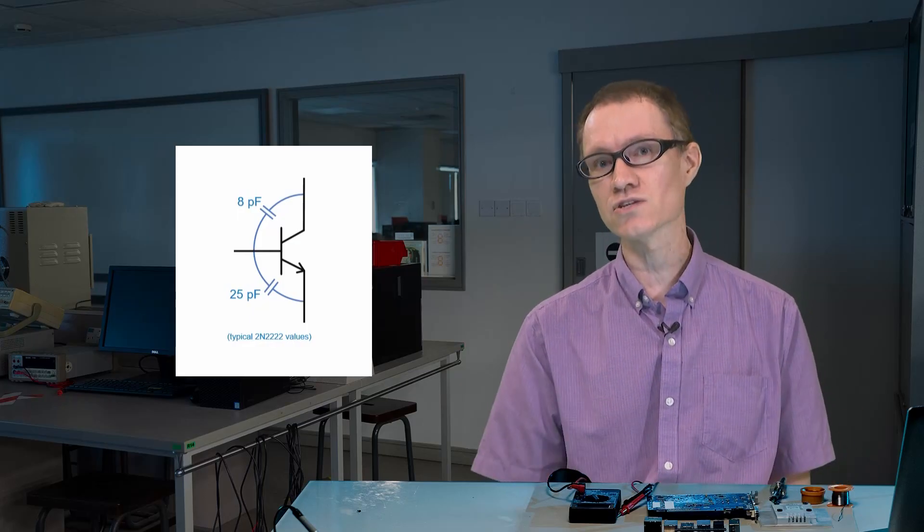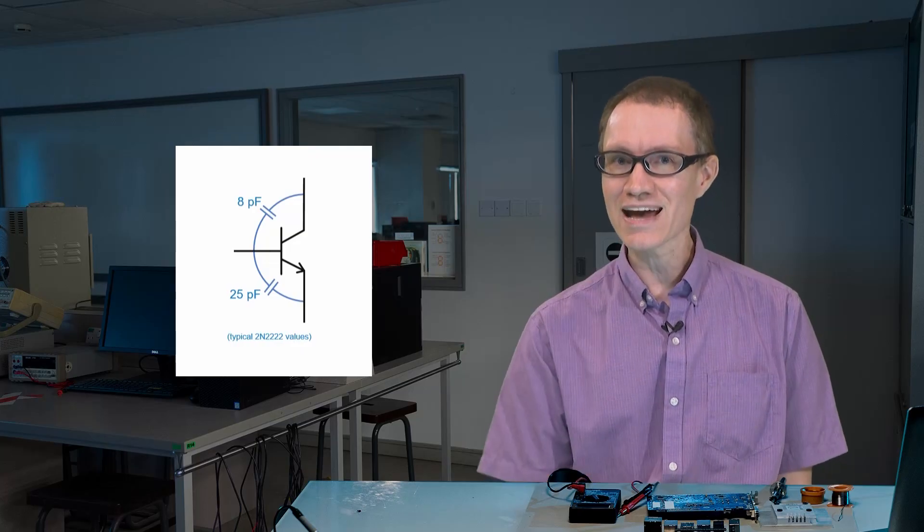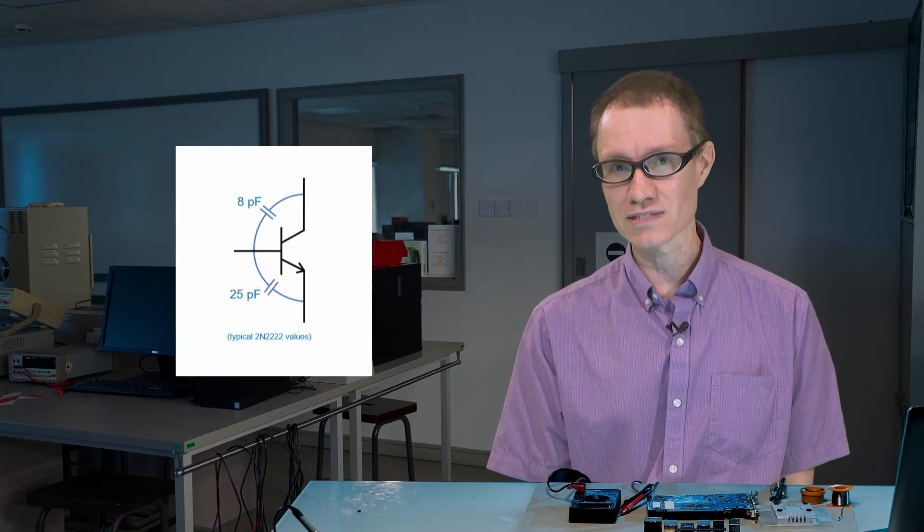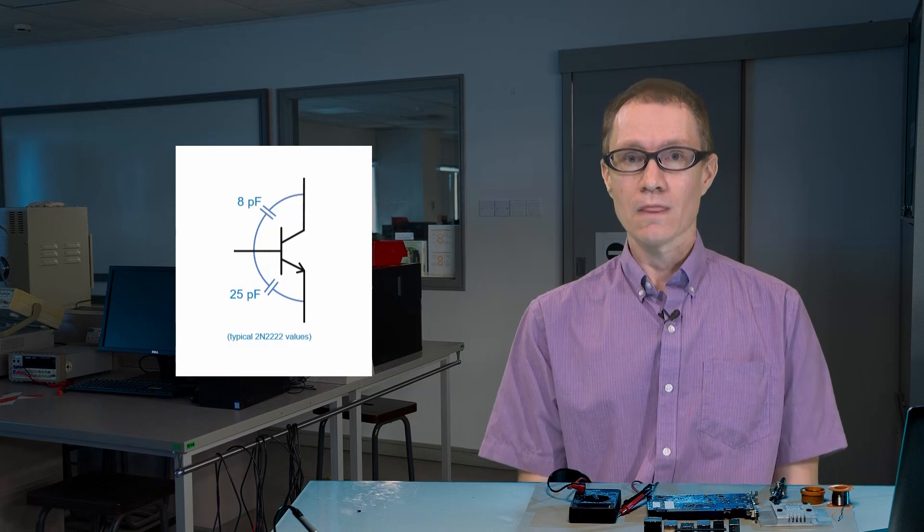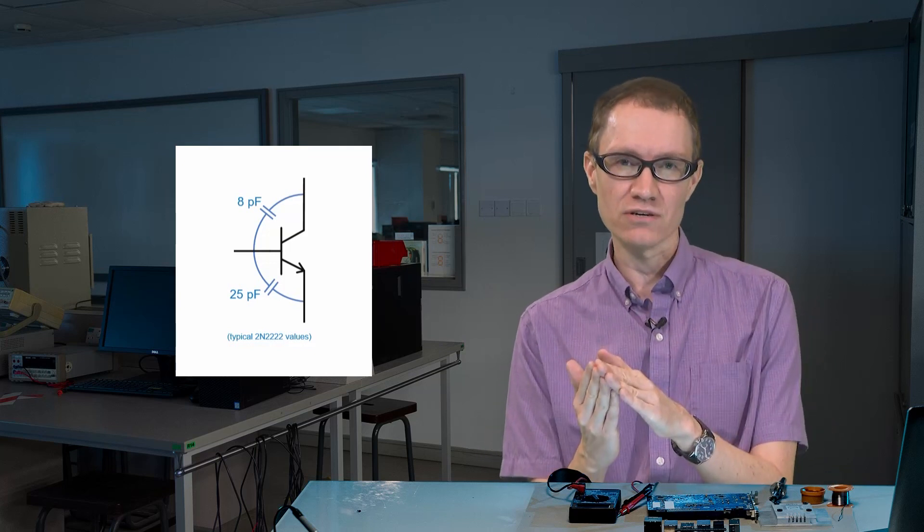Larger capacitances are worse because they form filters. But in this case, it tends to actually be the 8 picofarad capacitance that's worse because there's usually an inversion between the base and the collector. For example,